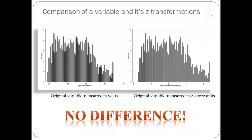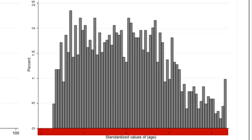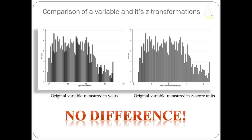On the right-hand side of the graphic, I've duplicated the same graph by creating a new variable, which is the Z-score of age. On the x-axis, instead of having age, we have Z-score, and on the y-axis we still have percentage. There's no difference in these two graphics — the information contained in the original age variable is identical to the information in the new Z-score variable, except the x-axis is measured in years of age versus Z-score units of age.